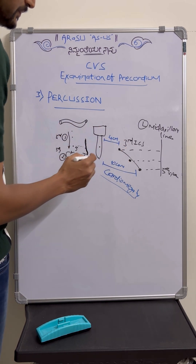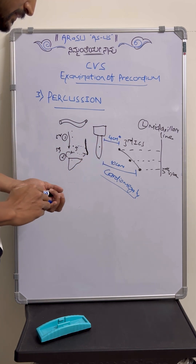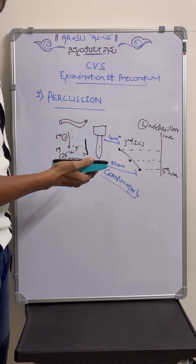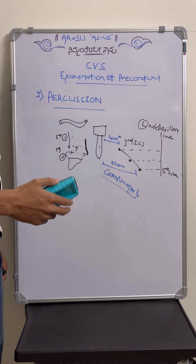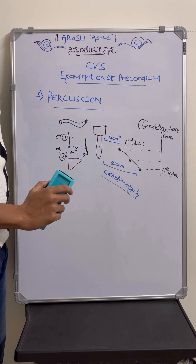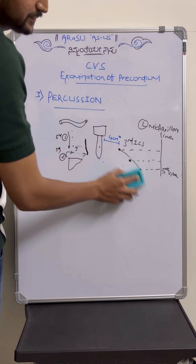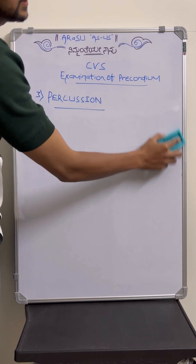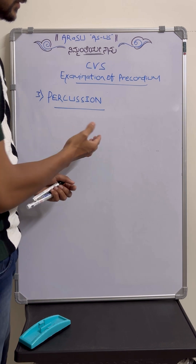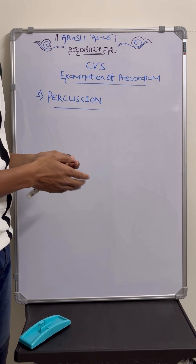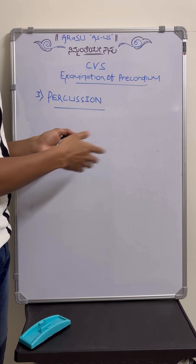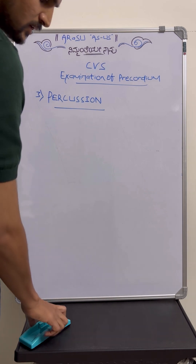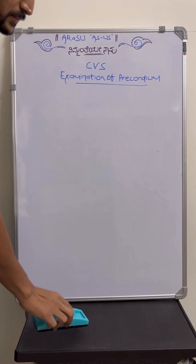Another important area is the left second intercostal space. Normally it is resonant on percussion — if it is dull, that is suggestive of pulmonary artery hypertension or idiopathic dilatation of the pulmonary artery. The benefits of percussion are: to know about cardiac size and detect cardiomegaly, to detect pericardial effusion where the width of dullness will be increased, and to look for pulmonary artery hypertension.